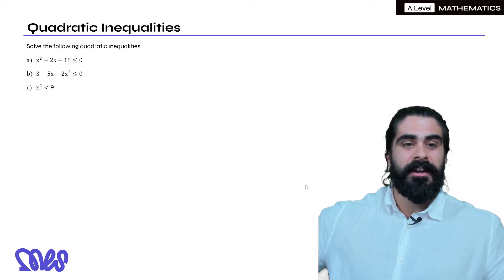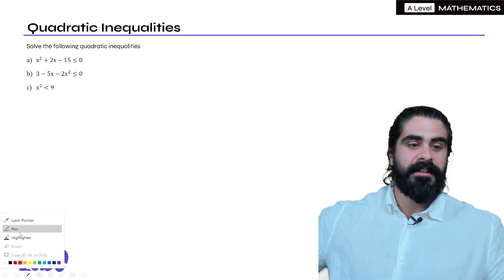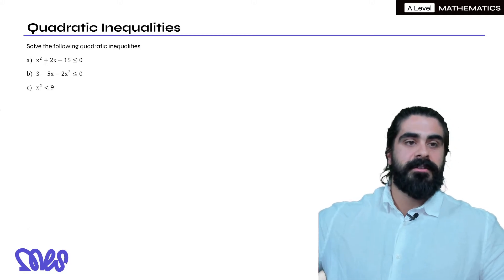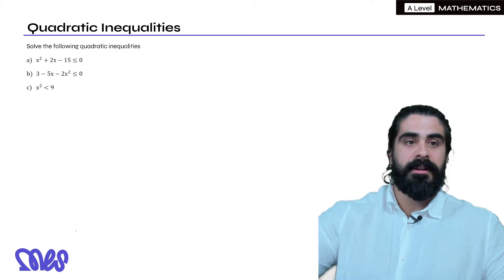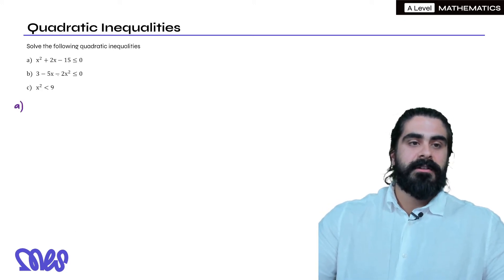So getting started on the actual skills-based stuff that you would have learned at GCSE is solve the following quadratics. So x squared plus 2x minus 15 is less than or equal to 0. So the first thing we want to do is we want to find out when is this quadratic equal to 0 by factorizing.